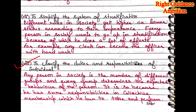Eighth point is: to clarify the duties and responsibilities of individuals. Any person in society is a member of different groups, and every group determines the expected behavior of the person. We become a member of many groups — family, school, friends, government, NGOs — formally and informally. Once we become a member of any group, our role tells us what our duties and responsibilities will be. Our role is what we expect and how to behave in particular situations. Within each group, we get clarity about what responsibilities and duties we have as members.